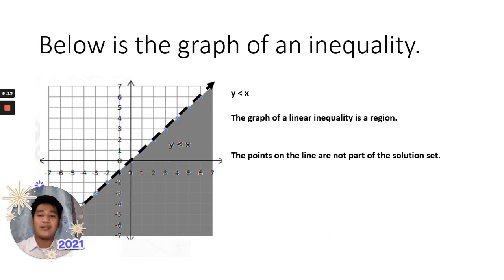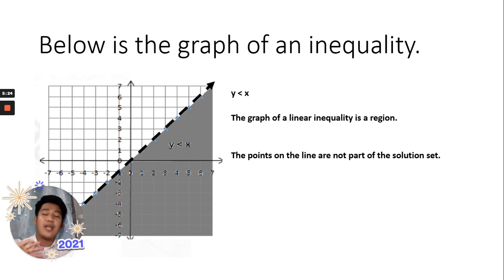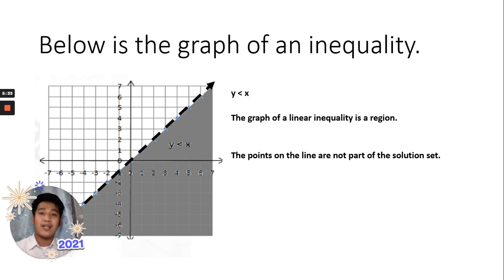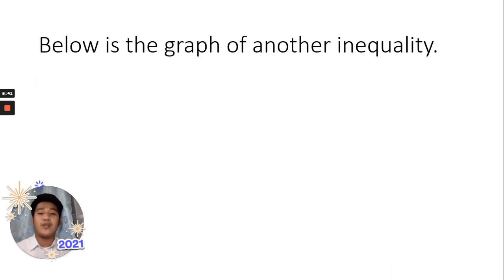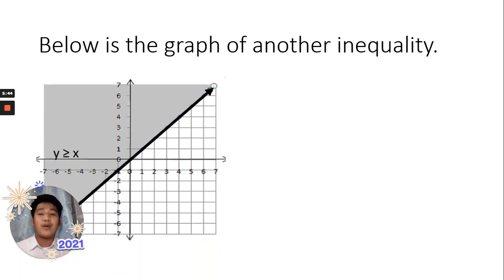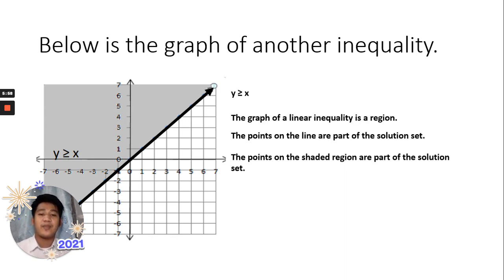Later on we will tackle more. The line separates the plane into two sides — the upper part and the lower part. The lower part is shaded, meaning all those points on that shaded region are solutions to the inequality y < x. Another graph shows a solid line this time, meaning all the points lying on that line are part of the solution set, and the points on the shaded region are part of the solution set as well.